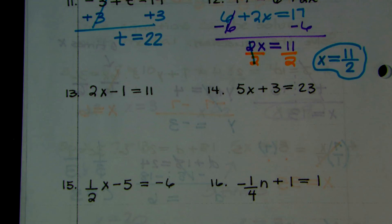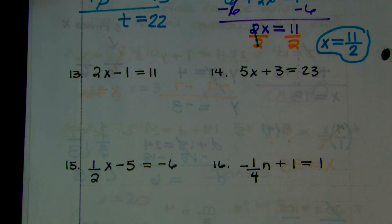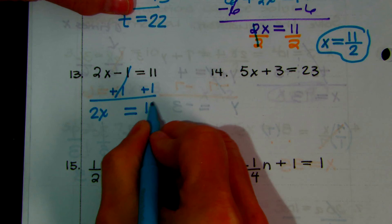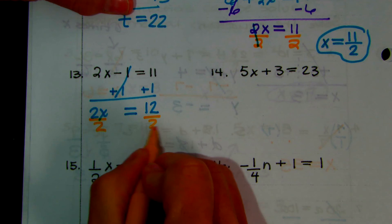Number 13: 2 times x minus 11 equals 1. What do you do first? You're going to add 11 to both sides. Those add out, 2x comes down, equal sign comes down, 11 plus 1 is 12. So now you have 2 times x equals 12. Divide both sides by 2 — those cancel — and x equals 12 divided by 2, which would be 6.